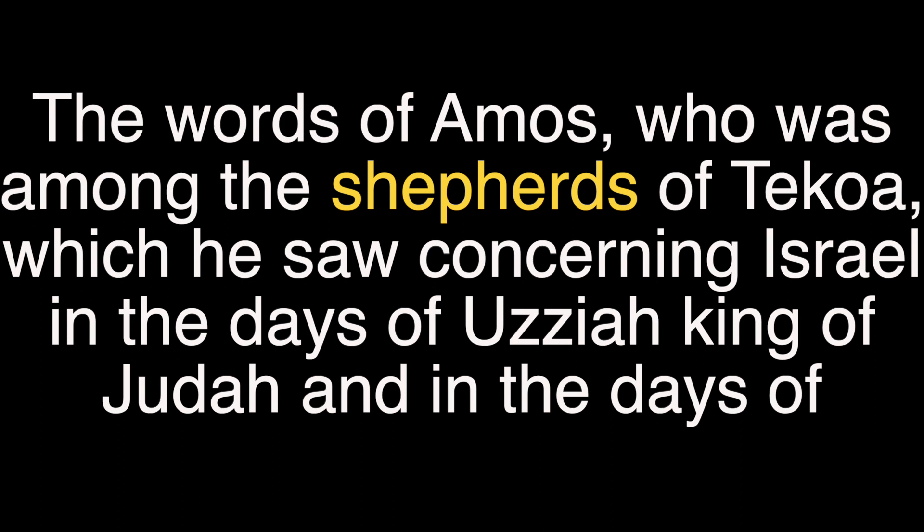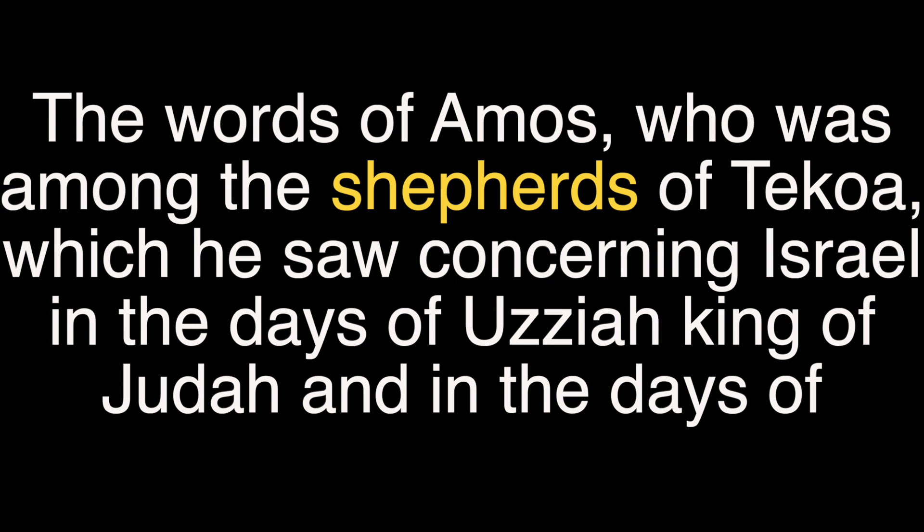But notice what is different about Amos. The words of Amos, who was among the shepherds of Tekoa, which he saw concerning Israel in the days of Uzziah king of Judah, and the days of Jeroboam the son of Joash king of Israel, two years before the earthquake. Amos was not a trained prophet, but a shepherd.